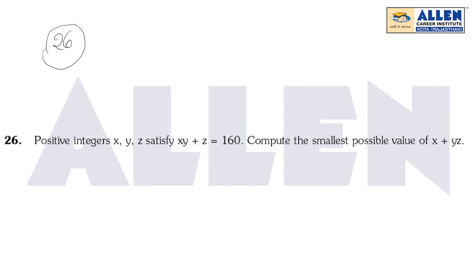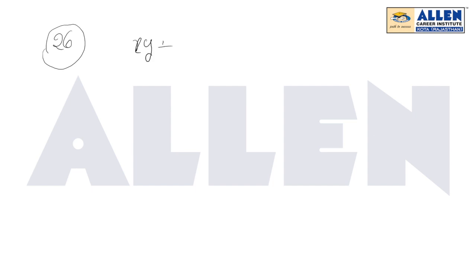Right now we will proceed for question number 26. The positive integers x, y, z satisfy the relation xy plus z equals 160. Compute the smallest possible value of x plus yz. This question is related to number theory.